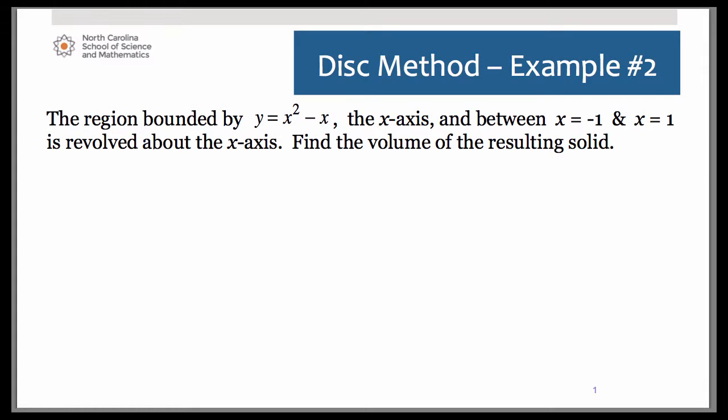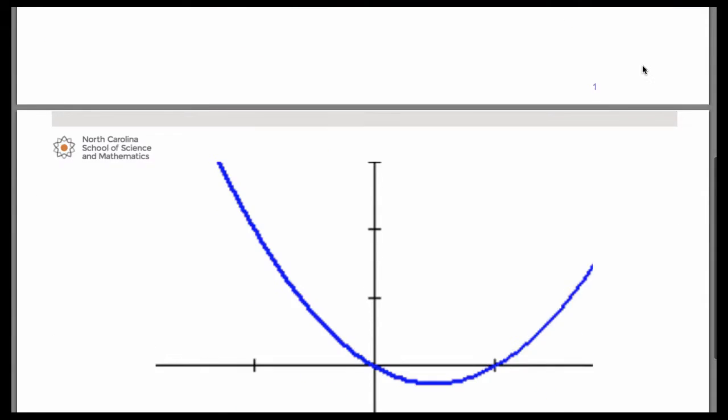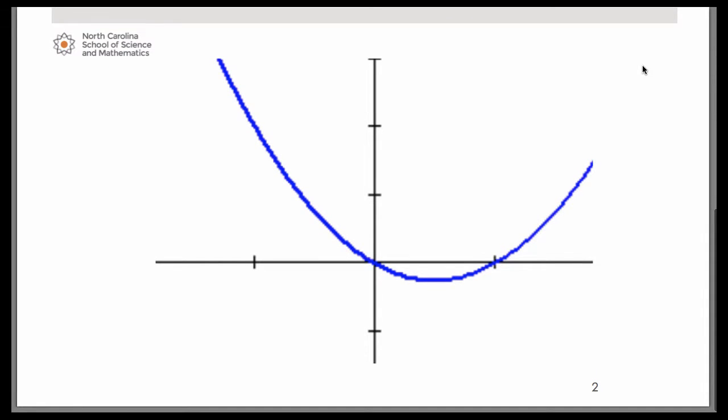And we are revolving it around the x-axis. So go ahead and graph those in your calculator. You should get a picture that looks like this. And I did adjust my window so you could see this a little bit better. Let's go ahead and draw in those vertical lines at negative 1 and positive 1. And our axis of revolution is the x-axis.